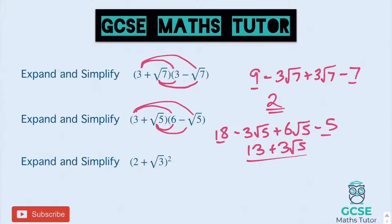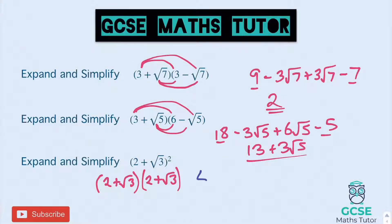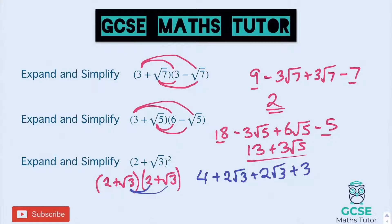And on to our last one. We've got to rewrite this question: (2 + √3) times another (2 + √3). So 2 times 2 is 4. 2 times root 3 is 2 root 3. Root 3 times 2 is another 2 root 3. And root 3 times root 3 is 3 — positive 3 again this time. Adding those all up: the 4 at the front and the 3 at the back makes 7. And 2 lots of 2 root 3 makes 4 root 3.